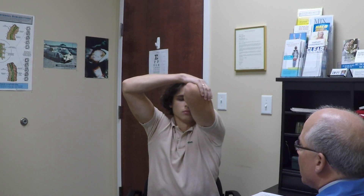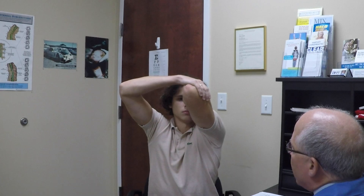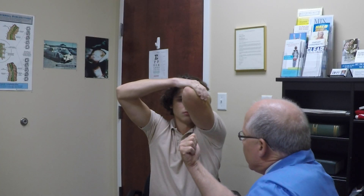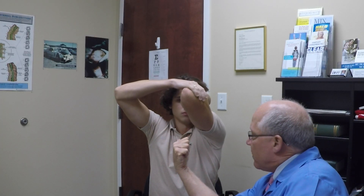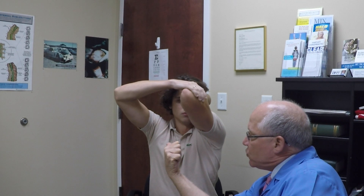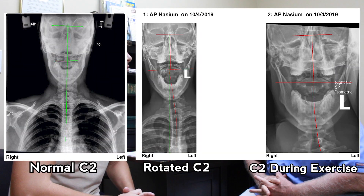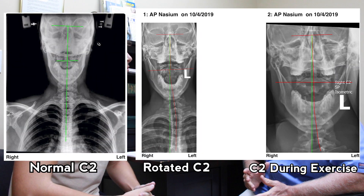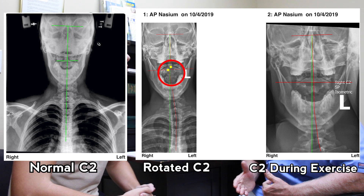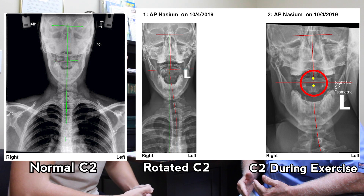Go ahead and show them the C2 spinous exercise. While he does this exercise, he's stabilizing his head and trying to turn his head to the left. When he does that, the rotation of the right C2 spinous comes out. We will see that when we look at the x-ray — on one side you're seeing the normal x-ray, and on the other side you're seeing the corrected position while Ben's doing the exercise.